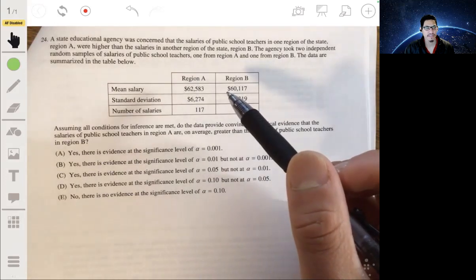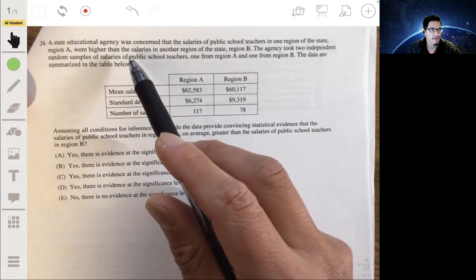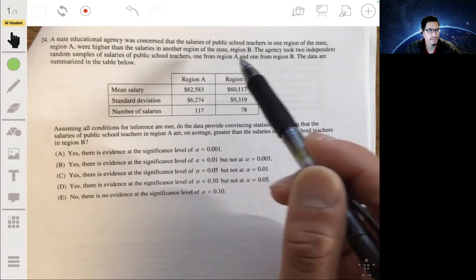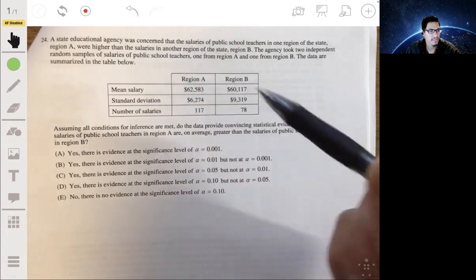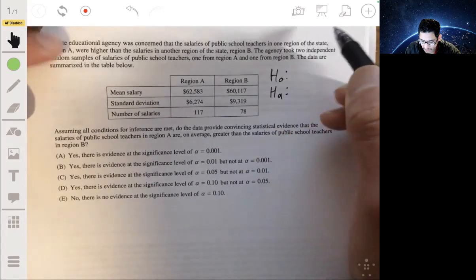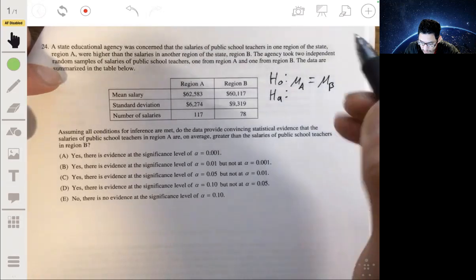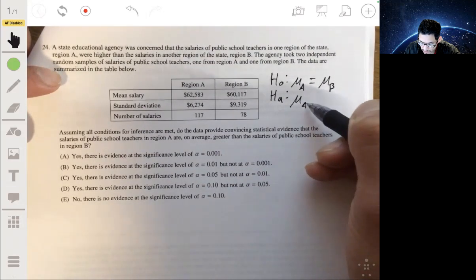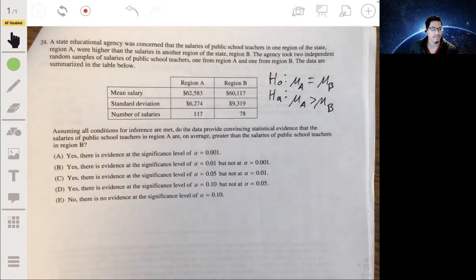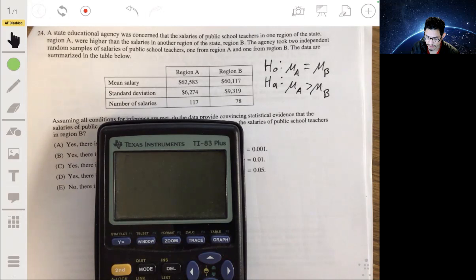In 24, a state educational agency was concerned about the salaries of public school teachers in one region of the state, A, so region A. And they were worried that they were higher than the salaries in another region of the state, region B. The agency took two independent random samples of salaries of public school teachers, one from region A and one from region B. The data are summarized in the table below. So we're going to conduct a significance test. Our null hypothesis is that their salaries are the same. So we would say the mean salary of region A, so mu A is equal to the mean salary of region B. The alternative is that the mean salary of region A is going to be greater than the mean salary of region B.